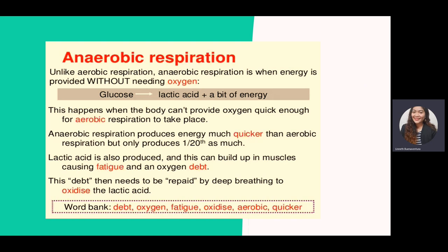Unlike aerobic respiration, anaerobic respiration provides energy without the need for oxygen. For example, glucose can produce lactic acid and a small amount of ATP. This occurs in muscle cells — when muscles continue to work but don't have enough oxygen, the muscle cells produce energy without oxygen, yielding only 2 ATP. This produces lactic acid, which can cause muscle cramps.